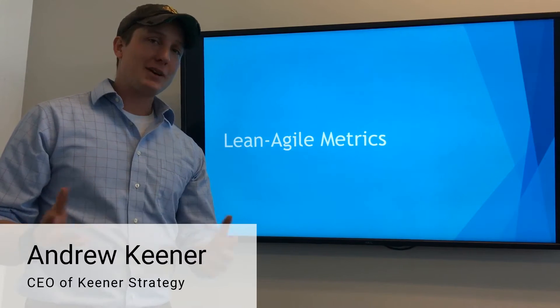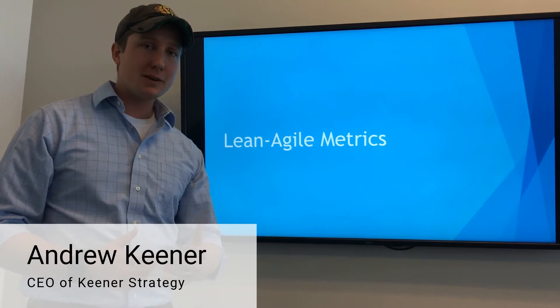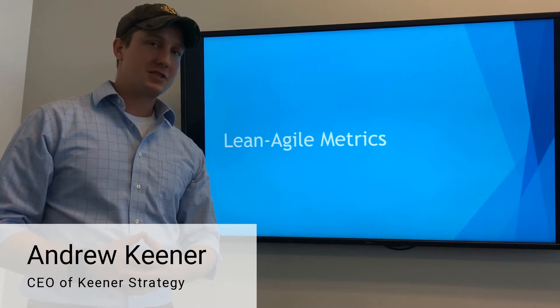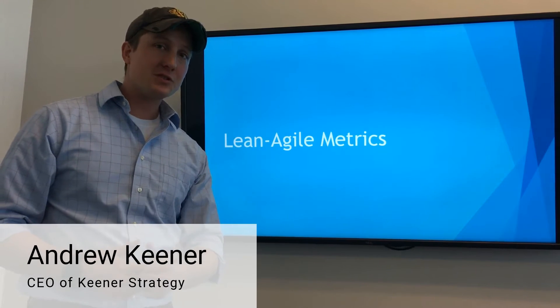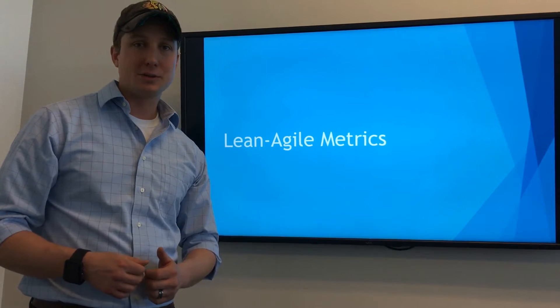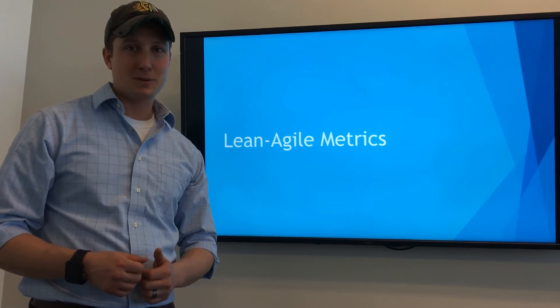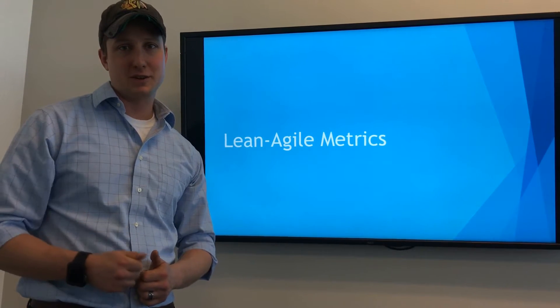Lean Agile metrics are a great way to track the health of your program and your teams. You can do this in tools like Atlassian Jira, but only if you set them up correctly. Let's look at a couple of my favorites.